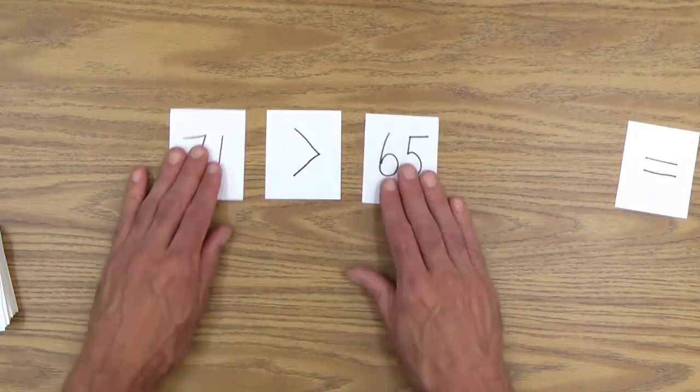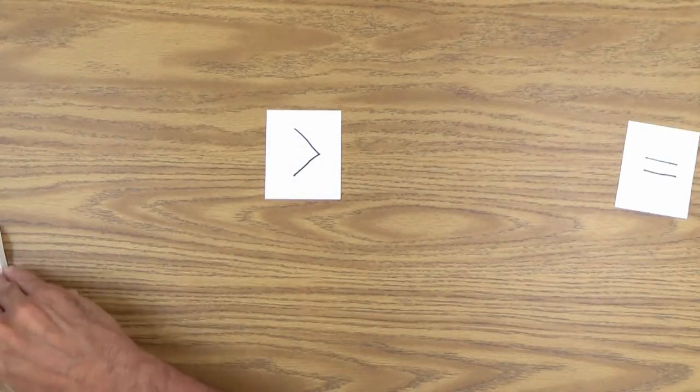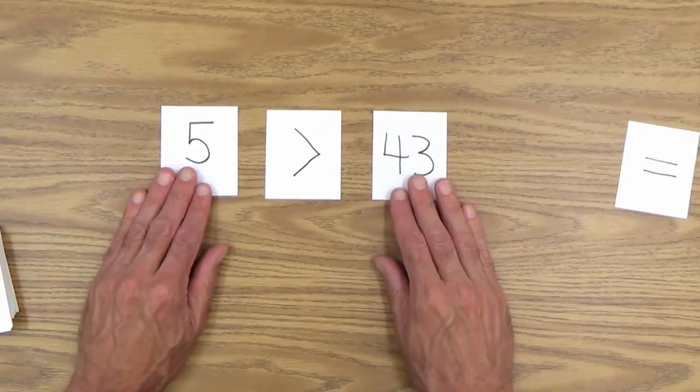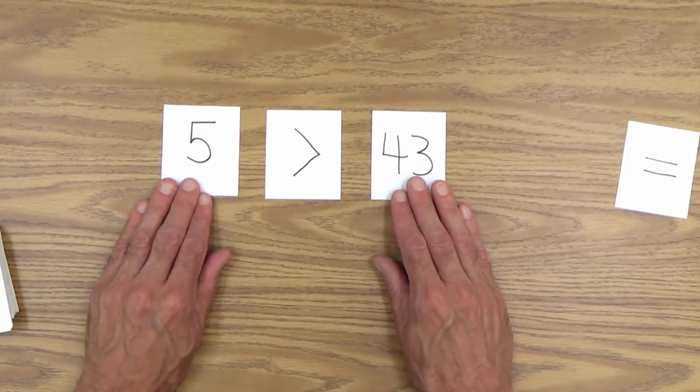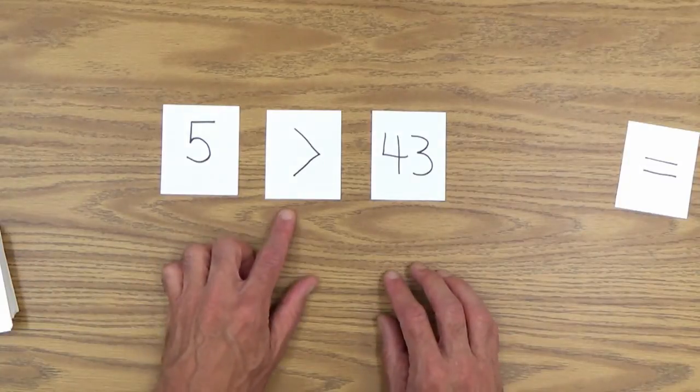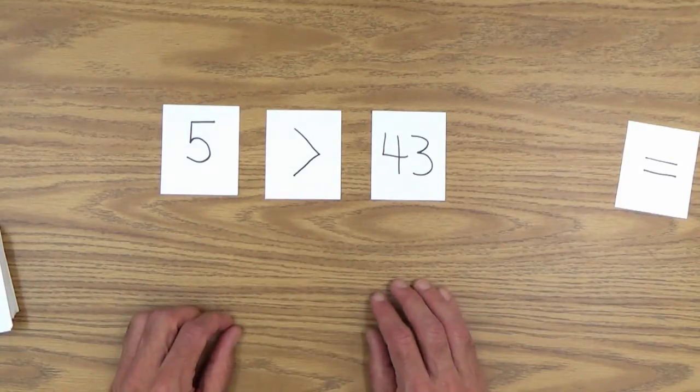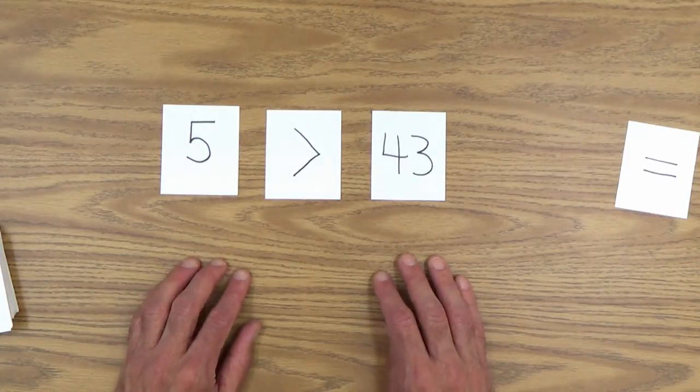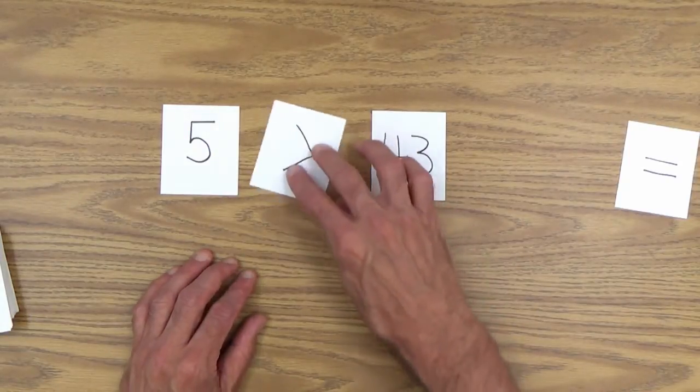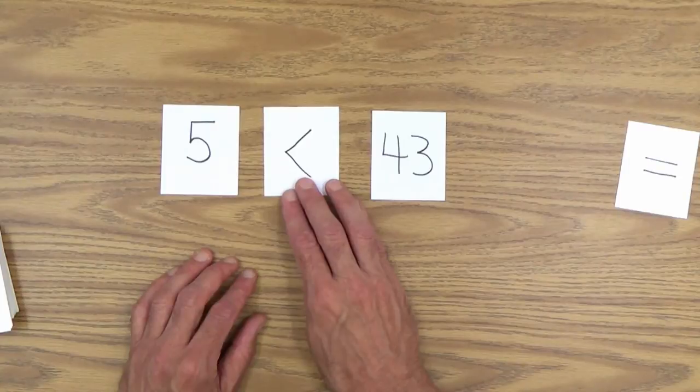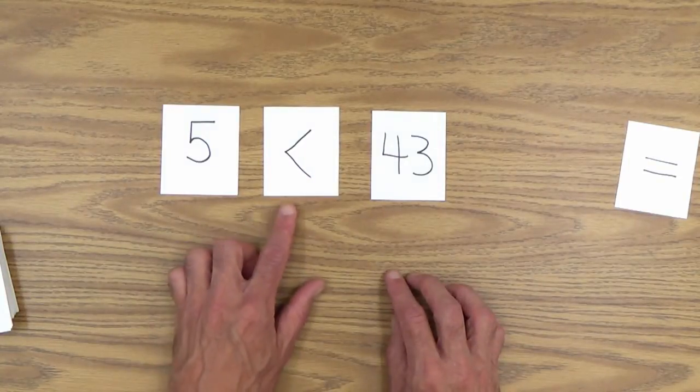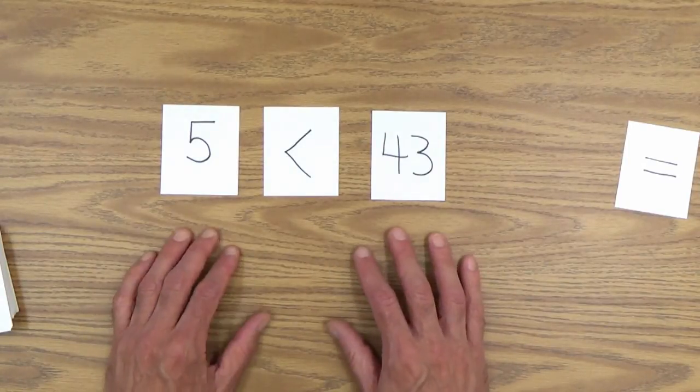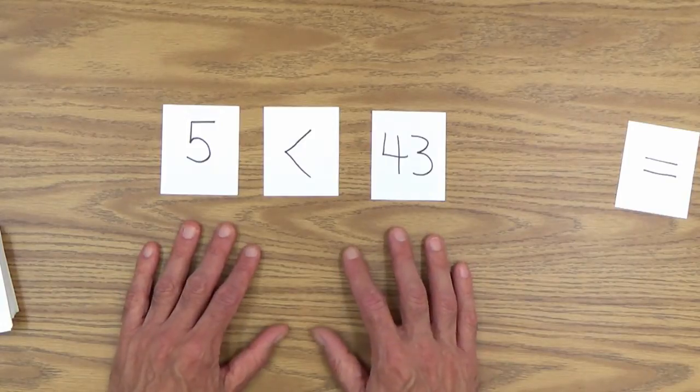So let's move on here with a couple more numbers. Well, here's a pretty good example here. Jimmy is 5 greater than 43. And he should look at that and he'll say, no, 5 is not greater than 43. And then you can say, well, let's change that to make it correct. You flip this around and then you say, look, 5 is less than 43.